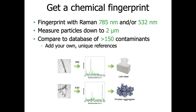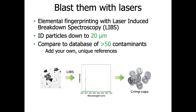Hound uses laser induced breakdown spectroscopy in a similar manner to Raman spectroscopy, but to identify inorganics and metals that can't be identified by Raman. LIBS is an atomic emission spectroscopy where we can apply the same fingerprinting database search we use for Raman — taking an elemental fingerprint and running a Pearson correlation between the reference library and the unknown to come up with a match rank score anywhere from 0 to 1000. With our laser induced breakdown spectroscopy, we can measure particles down to 20 microns. Below you can see an example spectrum of an aluminum crimp cap, where the defining feature is the aluminum atomic emission peak.